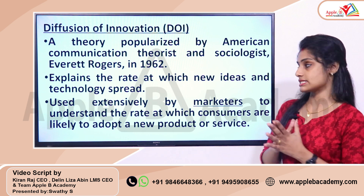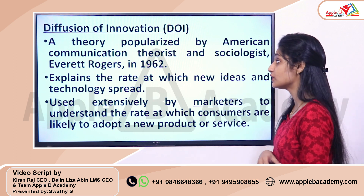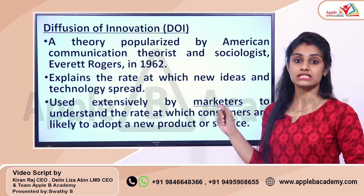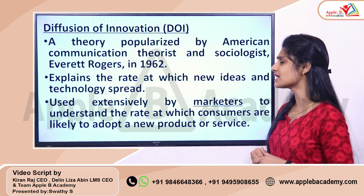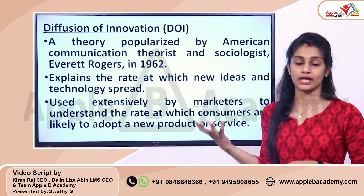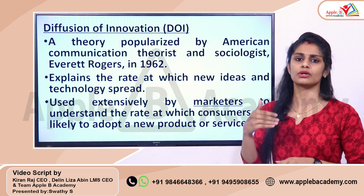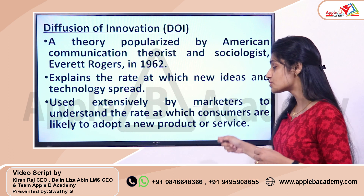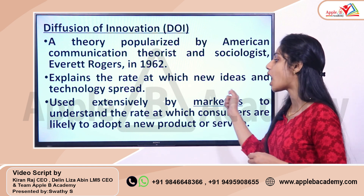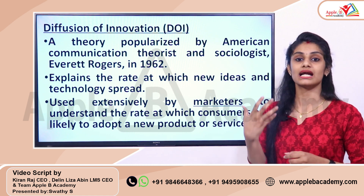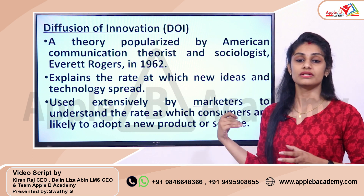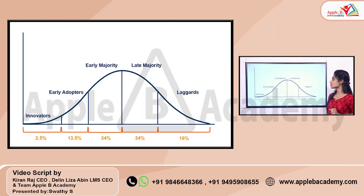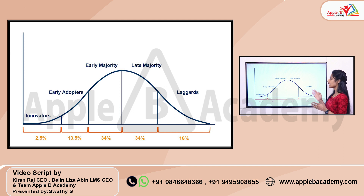This theory was proposed by the American communication theorist and sociologist Everett Rogers in 1962. This theory explains the rate at which new ideas and technology spread. From a marketing perspective, it is used extensively by marketers to understand the rate at which consumers are likely to adopt a new product or service. The adopter categories are: Innovators, Early Adopters, Early Majority, Late Majority, and Laggards.